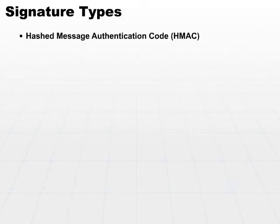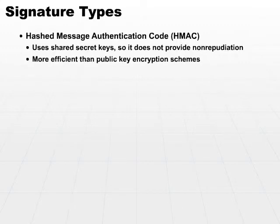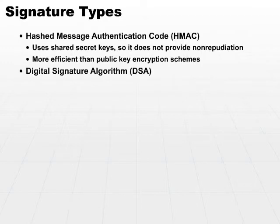There are several different algorithms that are used to implement digital signatures. Let's take a look at the Hashed Message Authentication Code, or HMAC. HMAC uses shared secret keys, so it doesn't provide non-repudiation. It is also more efficient than public key encryption schemes. So if you want something that's very fast and you're okay with using shared secret keys, HMAC will do the trick for you.